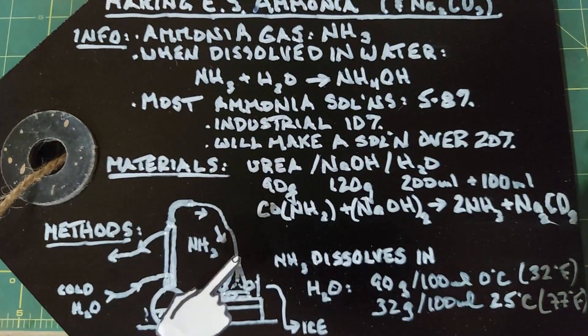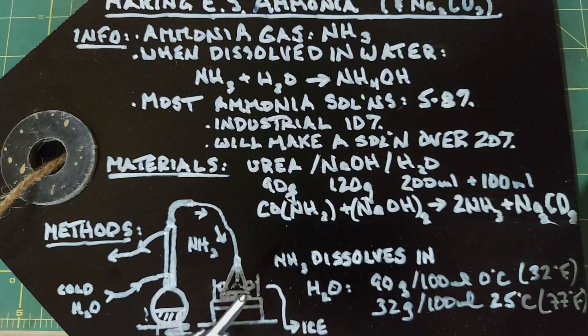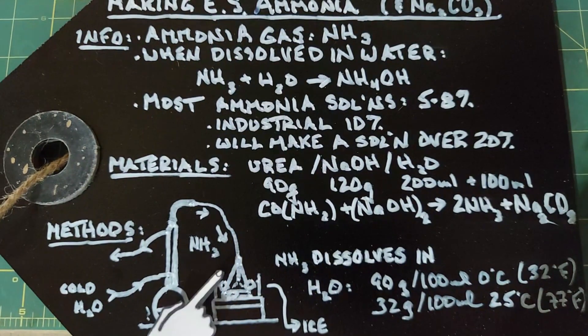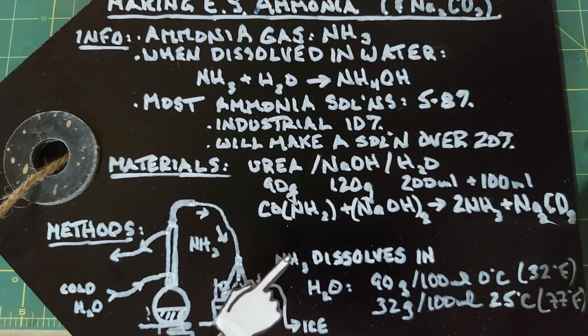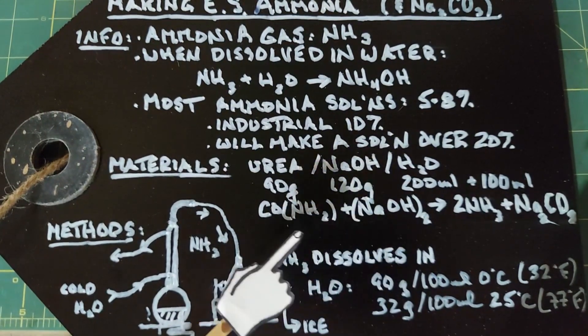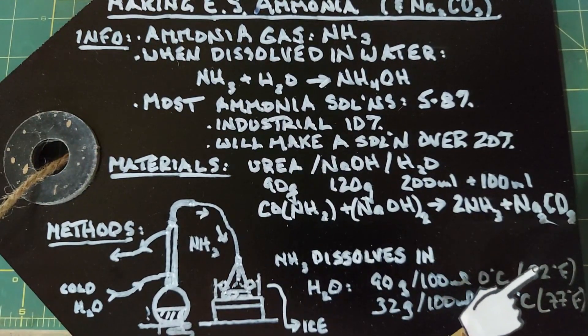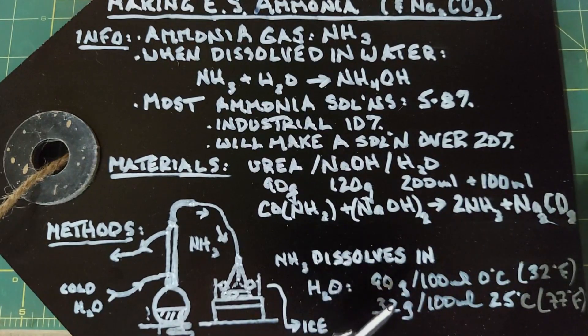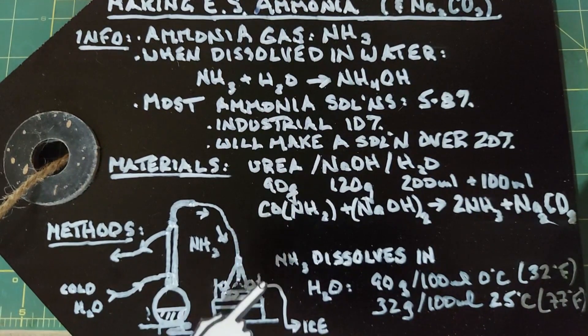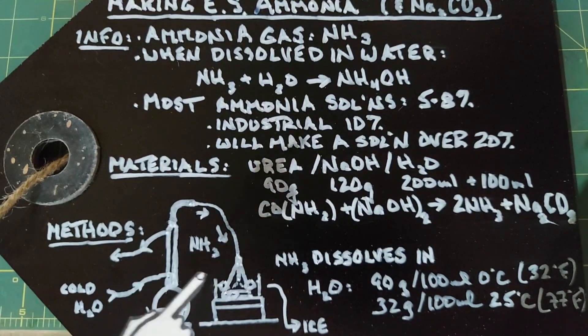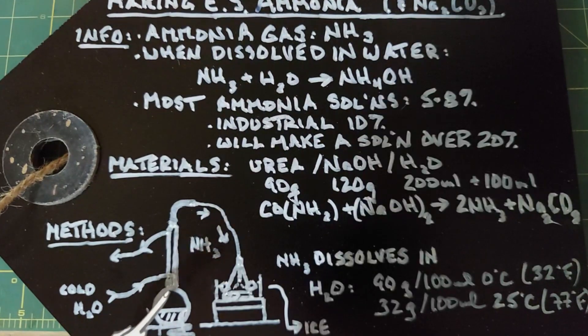As the gas continues up, it's going to go into a sealed container, a flask that will have 100 milliliters of water in it and will be surrounded with ice. It's important to keep this as cold as possible. The ammonia gas dissolves in water in these proportions: 90 grams per 100 milliliters at 0 degrees Celsius, which is freezing, and only 32 grams per 100 milliliters at 25 degrees Celsius or 77 degrees Fahrenheit. So the colder this is kept, the more ammonia gas will dissolve in the water.